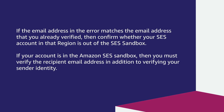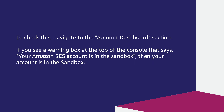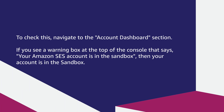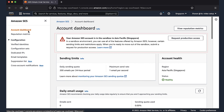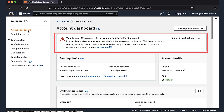If the email address in the error matches the email address that you've already verified, then confirm whether your SES account in that region is out of the SES sandbox. If your account is in the Amazon SES sandbox, you must verify the recipient email address in addition to verifying your sender identity. To check this, navigate to the account dashboard section. If you see a warning box at the top of the console stating that your Amazon SES account is in the sandbox, then your account is in the sandbox. If so, choose the 'Request Production Access' button to request production access. After you get production access, you can send emails to unverified email addresses as well.